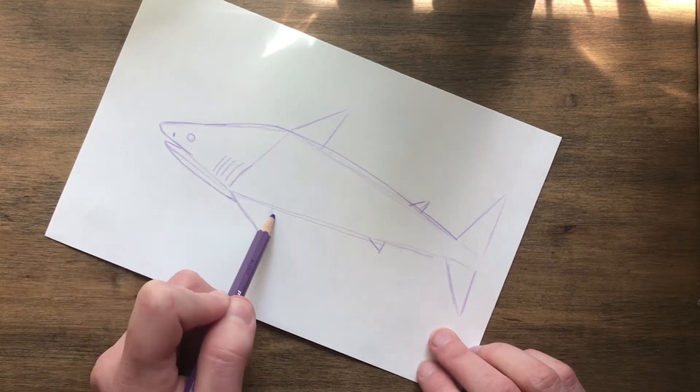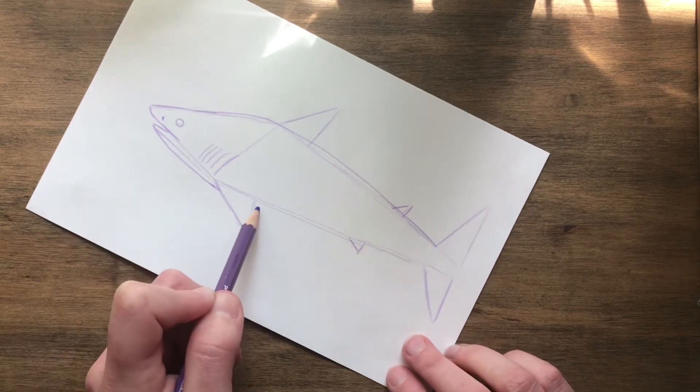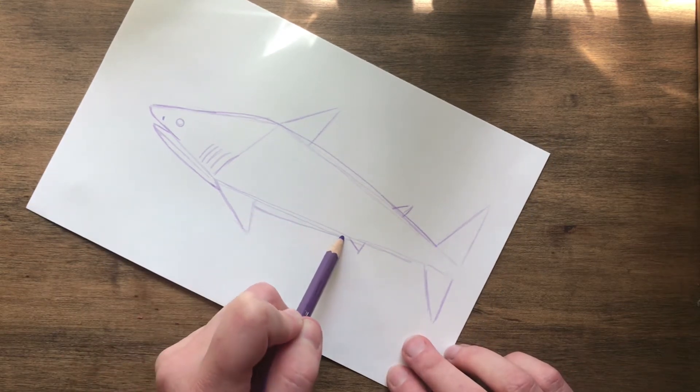And round out that bottom jaw. And the bottom of the shark will make that more rounded too. So he looks a little more plump. That's what we want.